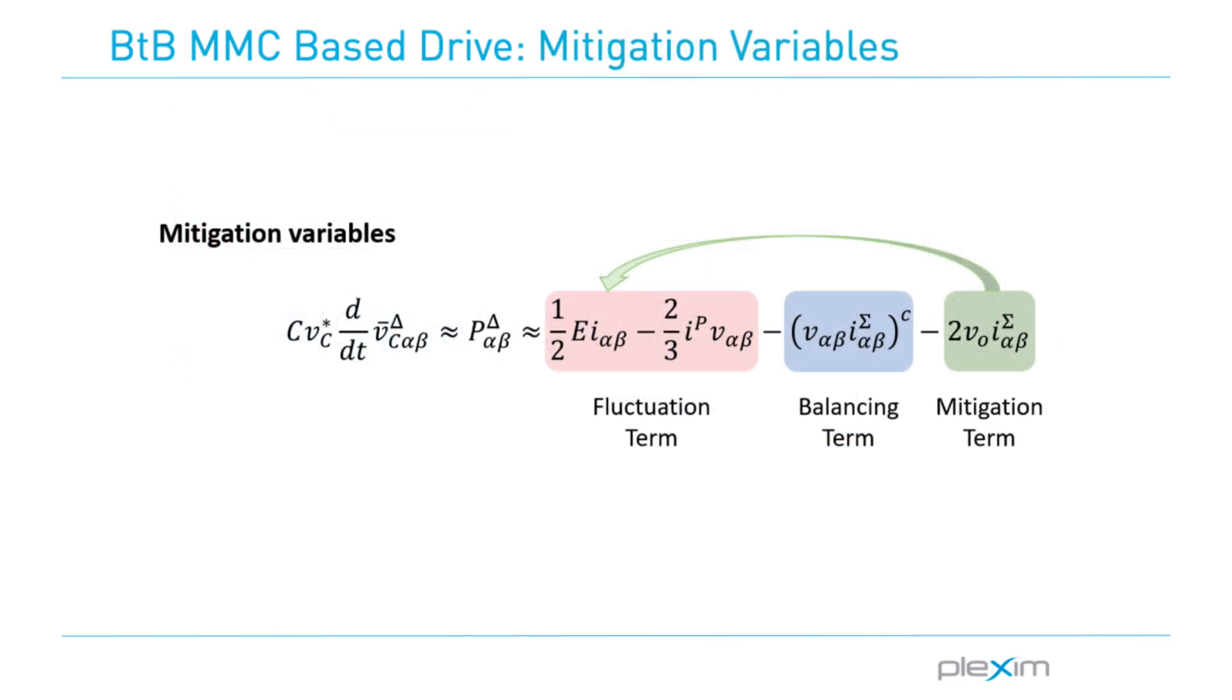To tackle this problem, for a variable speed drive at low frequencies, circulating currents and a high frequency sinusoidal common mode voltage called mitigation variables are introduced into the system. These mitigation variables reduce the fluctuations of voltage in the capacitors of the converter cells and do not affect the input and output currents of the system at low frequencies.